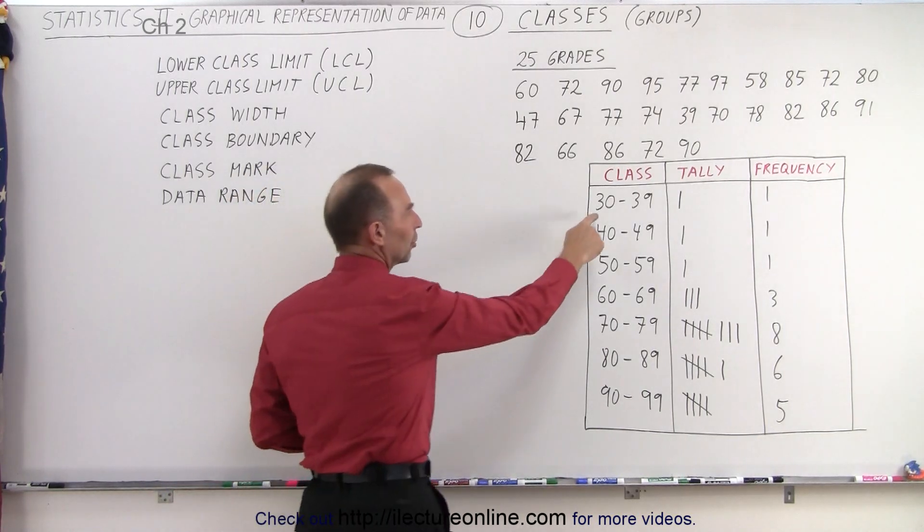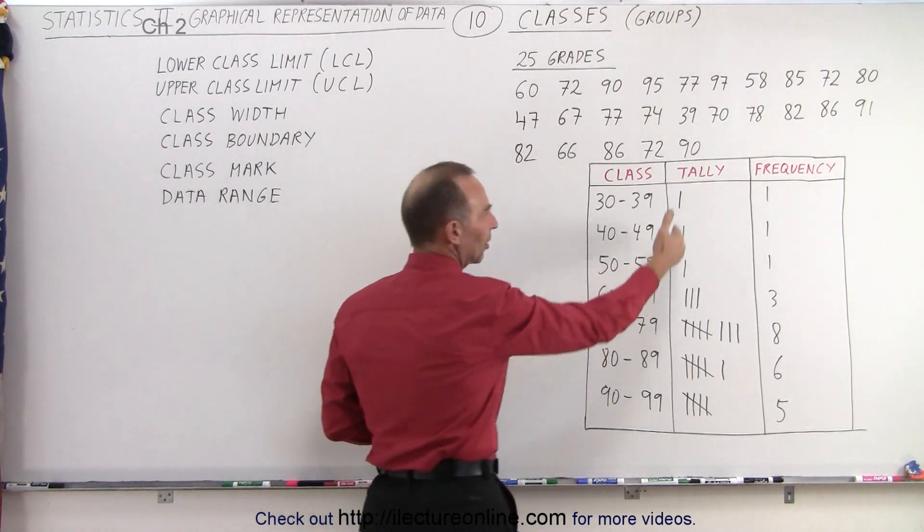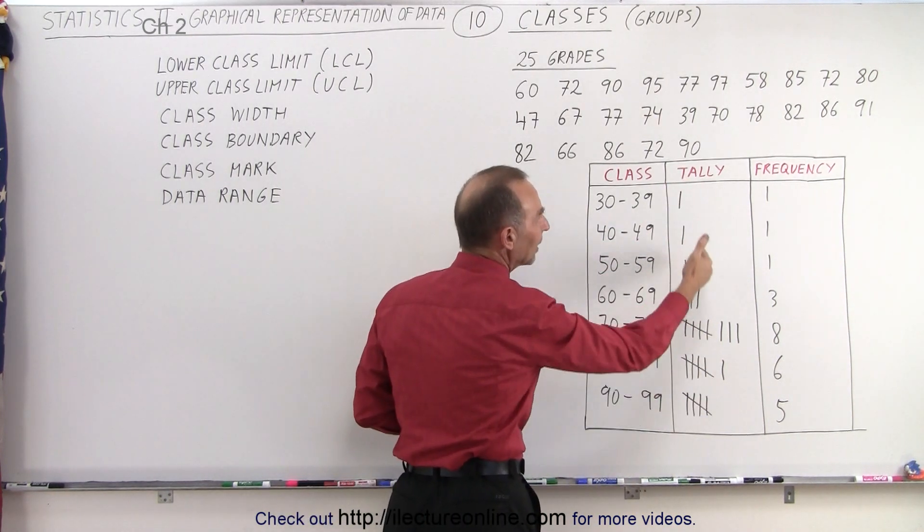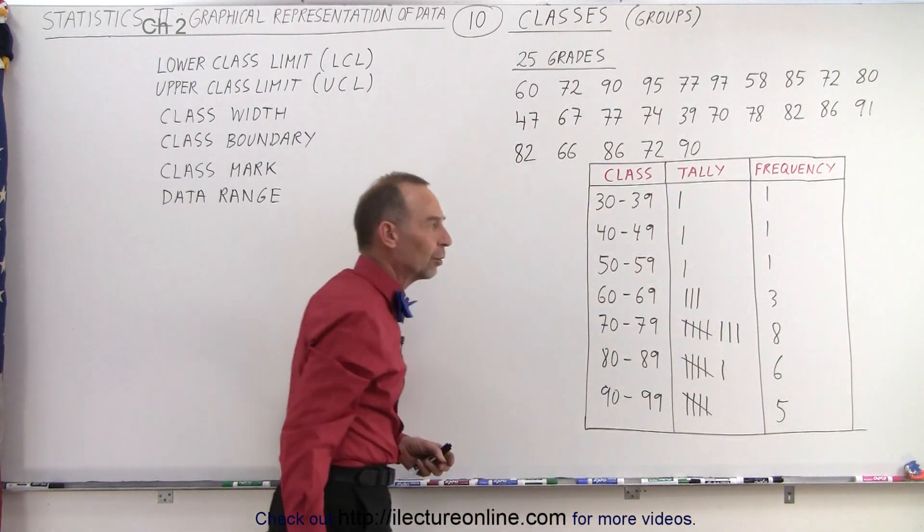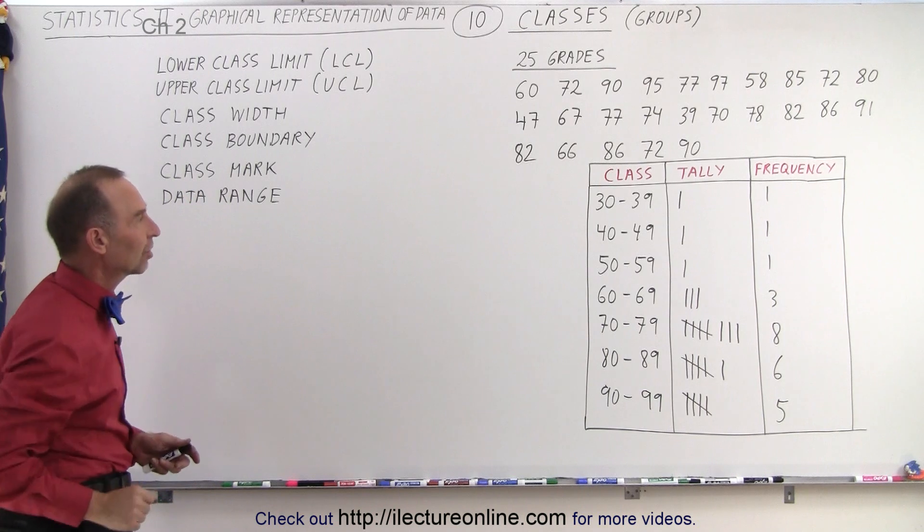So we have the class from 30 to 39, 40 to 49, 50 to 59 and so forth. Remember this concept here was doing a tally, and here we're measuring or at least identifying the frequency of occurrence for each class.